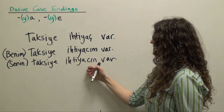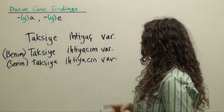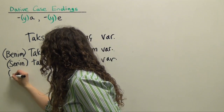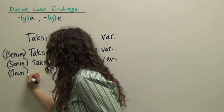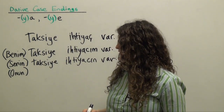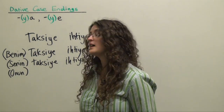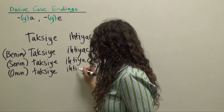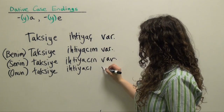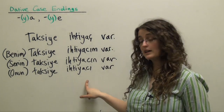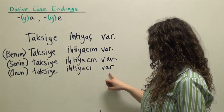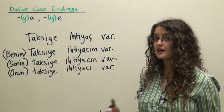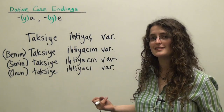Let's keep going. For the third person singular, optionally 'onun,' or you could put a person's name in the genitive here — 'Mehmed'in,' 'Leyla'nın,' etc. 'Onun taksiye ihtiyacı var' — his, her, or its need for a taxi exists. Or alternatively with 'yok': 'Onun taksiye ihtiyacı yok' — he or she does not need a taxi, his or her need for a taxi does not exist.